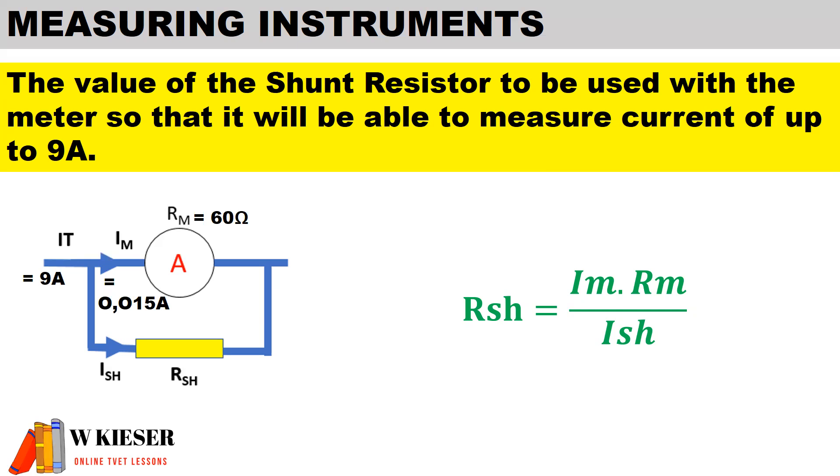Our formula shows that to calculate the value of the shunt resistance, it will be the current flow through the meter multiplied by the resistance of the meter divided by the shunt current. The shunt current is I total minus the current flow through the meter, which gives us 8.985 amps. Substituting 0.015 amps multiplied by 60 ohms divided by 8.985 amps, we end up with a shunt resistance of 0.1 ohms.